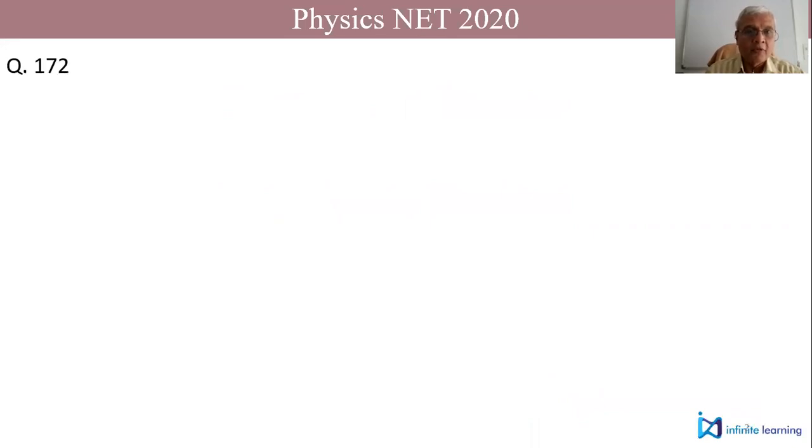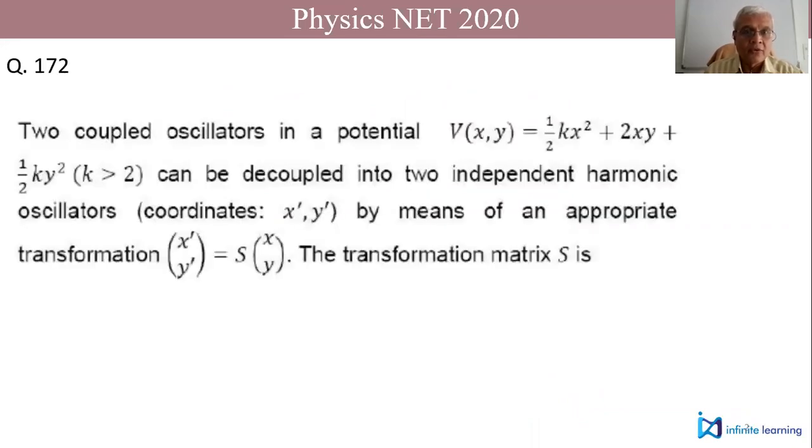The question number for the problem is 172 which says two coupled oscillators in a potential which is given by V(x,y) = (1/2)kx² + 2xy + (1/2)ky² where k is greater than 2.